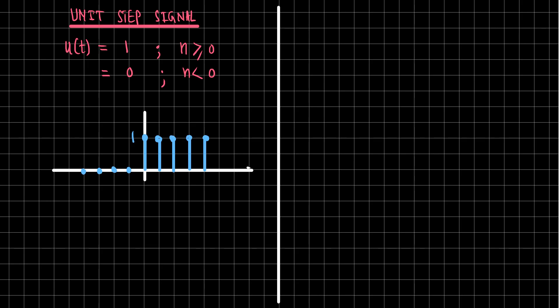This is a function of n, denoted u[n]. Note there is a correction: it is u[n], not u[t] — I am defining the signal for the discrete time case. The indices run as 0, 1, 2, 3, 4 and so on in the positive direction, and minus 1, minus 2, minus 3, minus 4 and so on in the negative direction.